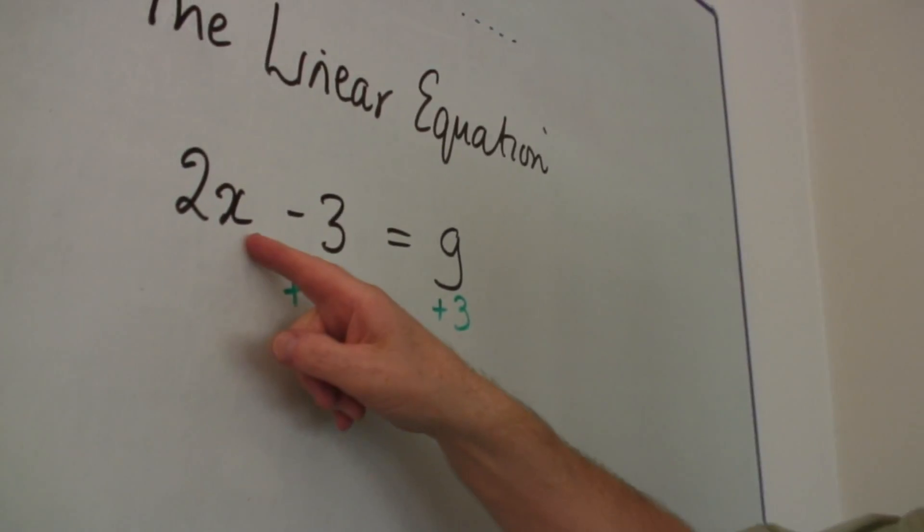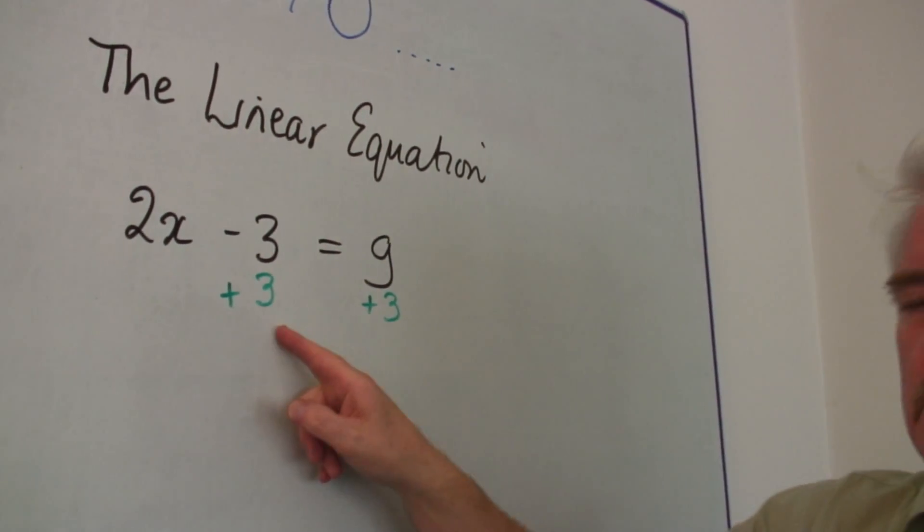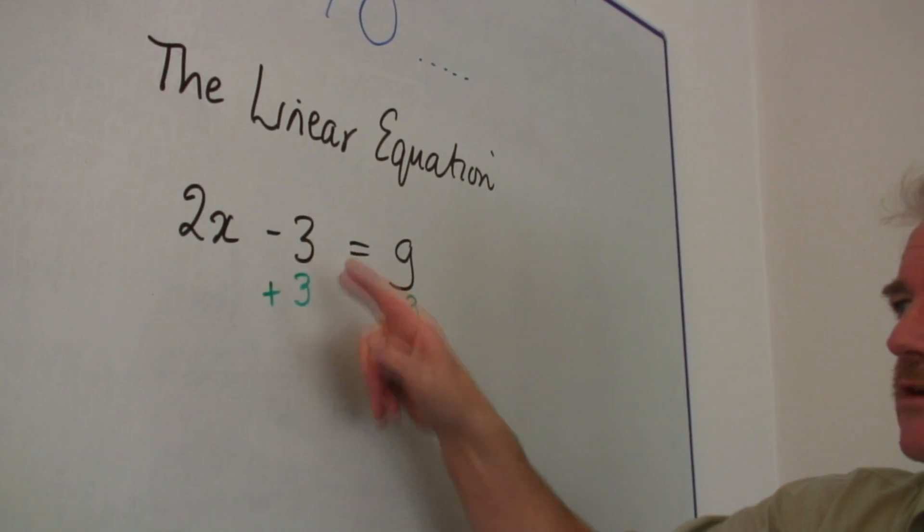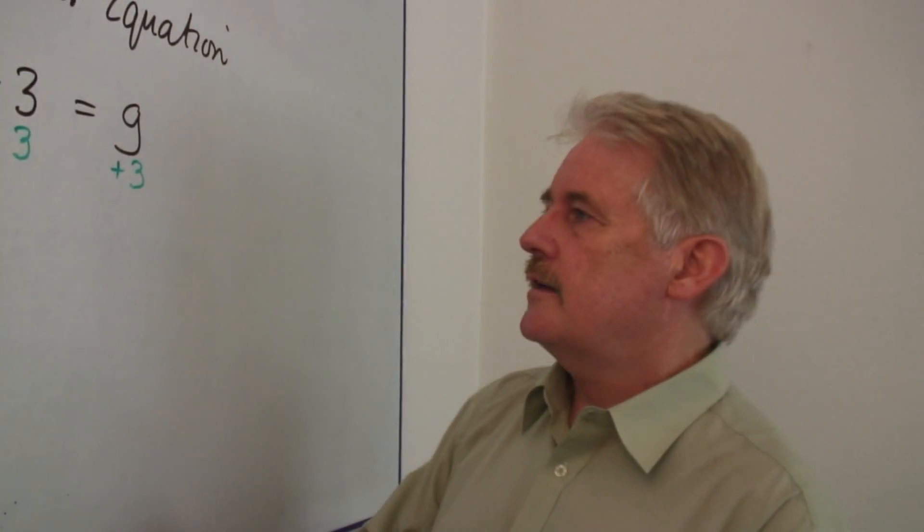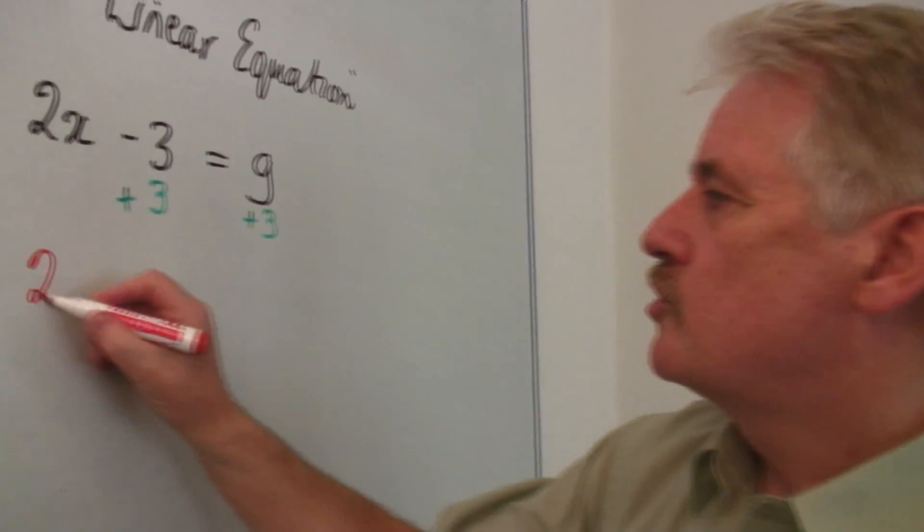Now 2x minus 3 plus 3, well minus 3 plus 3 is nothing. So on the left hand side, I will have just 2x.